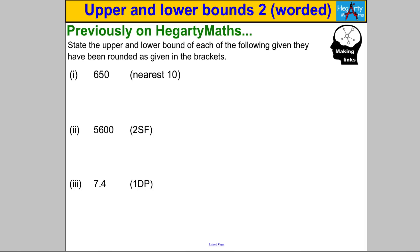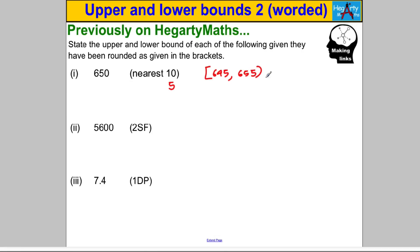you've been able to identify and work out the upper and lower bounds of any numbers that have been rounded. Pause the video and check you can find the upper and lower bounds of these three numbers, given that they've been rounded as told in the brackets. The technique is: look at what we've been rounding to — the nearest ten — half that number, subtract it from 650 to get the lower bound of 645, and add it on to get the upper bound of 655. We put a square bracket around 645 because it's included as a lower bound, but a curly bracket around 655 to show we really mean 654.9 recurring.